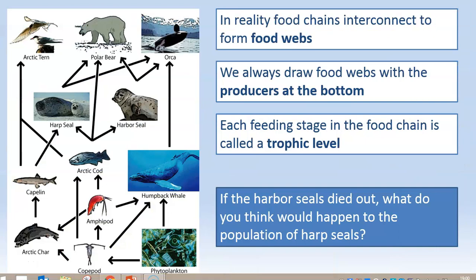In reality, organisms don't just line up in food chains — it's much more complicated in the environment. We have lots of different food chains interacting with each other to form a food web. When we draw a food web, we always put the producer at the very bottom and work our way up as we go from organism to organism. Each feeding stage in a food chain or food web is referred to as a trophic level — 'trophic' comes from a stem meaning feeding, so it's like a feeding level.